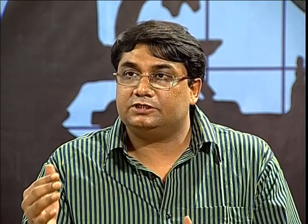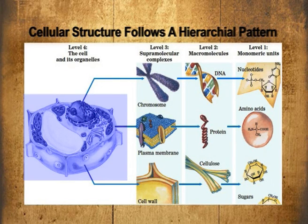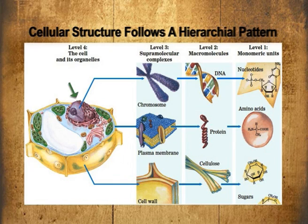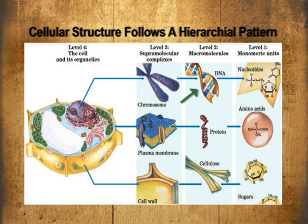The molecular organization of cells follows a hierarchical structure illustrated in a diagram with four levels. The highest level is the cell or the organelle - for example, the nucleus. Going down to level 3 is the supramolecular complex; in this case, the chromosome that stays within the nucleus. Going down to the next level, we see the macromolecule constituting the supramolecular complex.